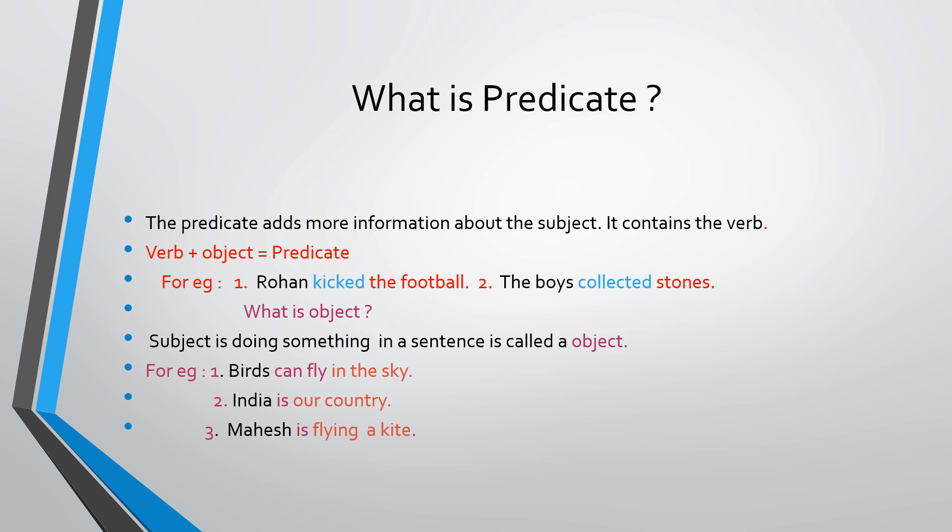For example: 'Rohan kicked the football.' Rohan is the subject, kicked is the verb, and the football is the object. Another example: 'The boys collected stones.' The boys are the subject, collected is the verb, and stones are the object. So verb plus object becomes a predicate. Understood what is predicate? Verb plus object becomes the predicate — it tells what the subject is doing.